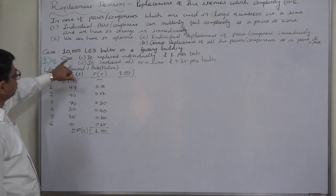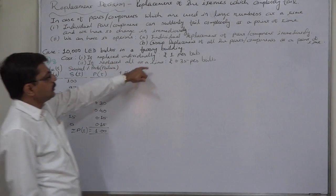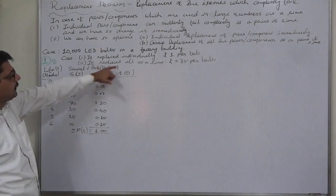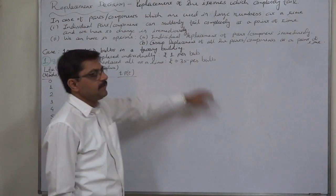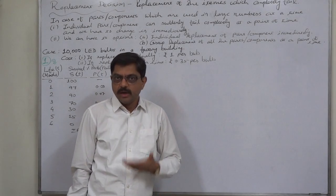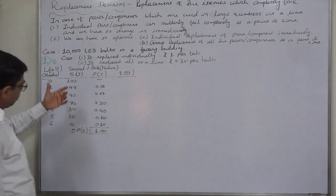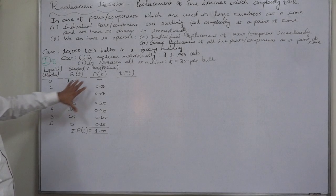The cost if replaced individually: rupee 1 per bulb. If replaced all at a time: rupees 0.35. This is very cheap due to bulk purchase. The probability distribution of survival as well as failure is available.